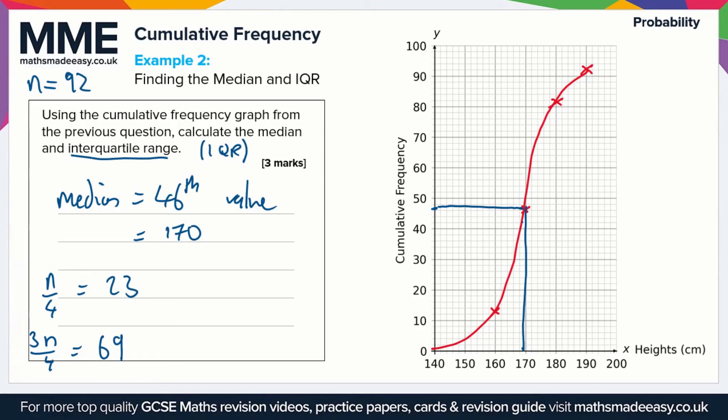Going to 23 on the cumulative frequency axis, that's about here. So if we go across and then down, that comes out at about 164. So that's the 23rd value, 164. These are in centimeters here.